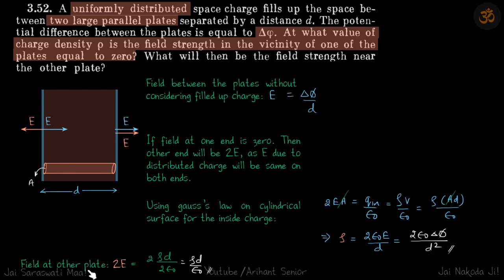Now what will be the field on the other plate? It will be twice of E. So E you can find from here. E here will be D rho by 2 epsilon. D rho by 2 epsilon into 2 which will give answer as rho D by epsilon. Simple question? Thank you very much.